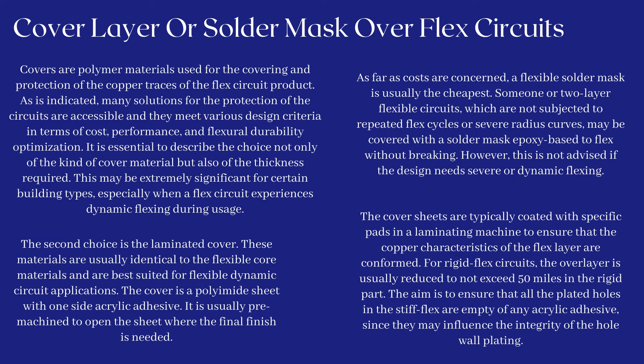The second choice is the laminated cover. These materials are usually identical to the flexible core materials and are best suited for flexible dynamic circuit applications. The cover is a polyamide sheet with one-side acrylic adhesive, usually pre-machined to open the sheet where the final finish is needed. The cover sheets are typically coated with specific pads in a laminating machine to ensure that the copper characteristics of the flex layer are conformed. For rigid-flex circuits, the overlayer is usually reduced to not exceed 50 mils in the rigid part, to ensure that all the plated holes in the stiff-flex are empty of any acrylic adhesive.